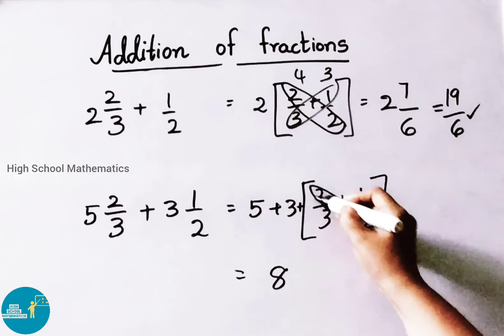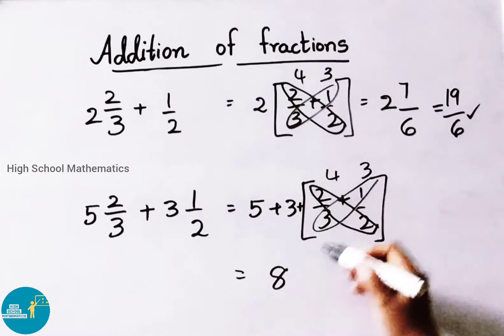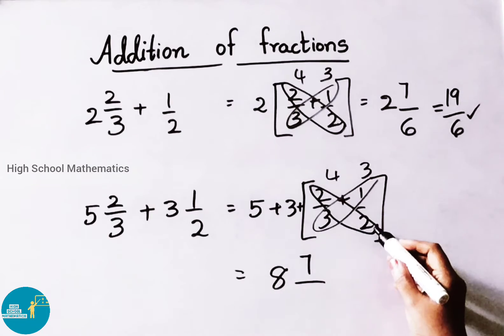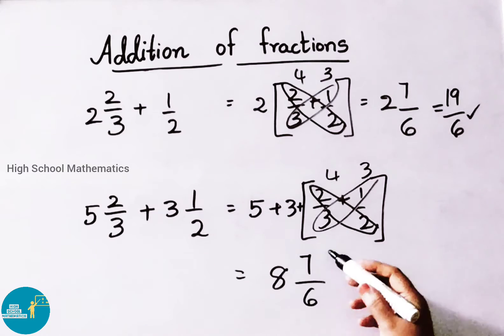Now we shall do cross multiplication. 2 times 2 is 4. 3 times 1 is 3. 4 plus 3, write down in the numerator, 7 by. Denominator multiply, 3 times 2 is 6. So we got here answer 8 and 7 by 6.